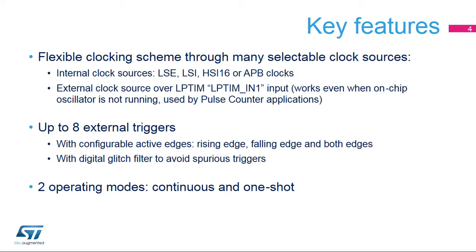The low-power timer features up to eight external trigger sources with configurable polarity. External trigger inputs feature digital filters to cancel out faulty triggers that could be raised in noisy operating environments. The low-power timer can be configured to run either in continuous or one-shot mode. One-shot mode is used for generating pulse waveforms, while continuous mode is used to generate PWM waveforms.